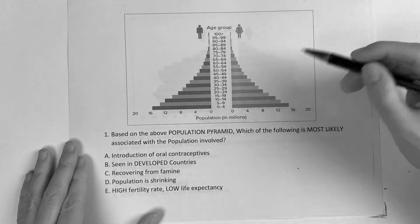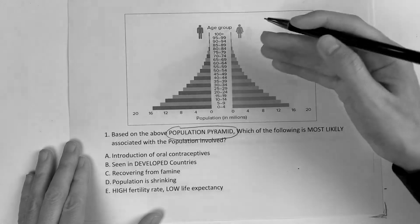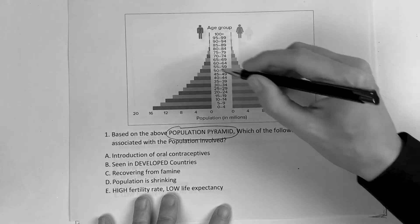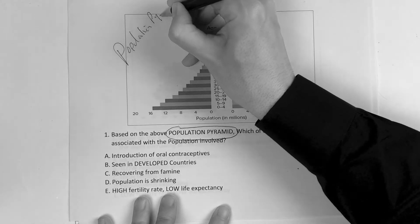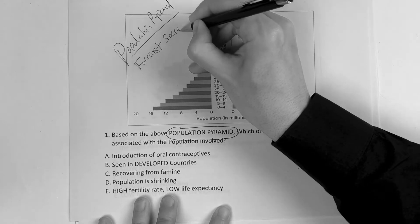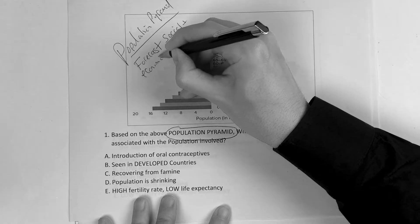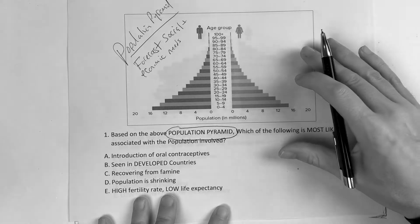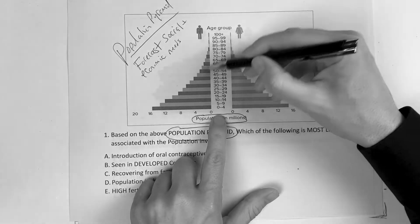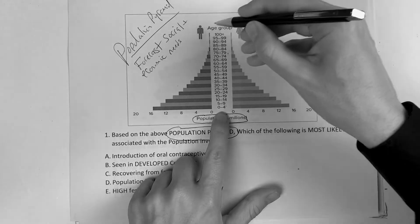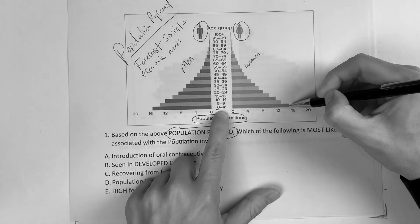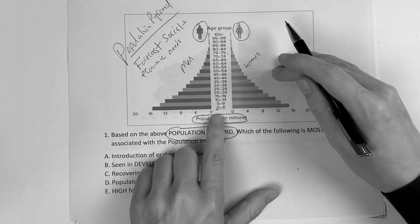The purpose of the population pyramid is so they can forecast social and economic needs — basically plan for the population. At the bottom is always going to be the population in millions, since this is usually a country. The age groups are shown on the side, with men on one side and women on the other. So ages zero to four, there's this many millions of females, and so on — that's how you read it.